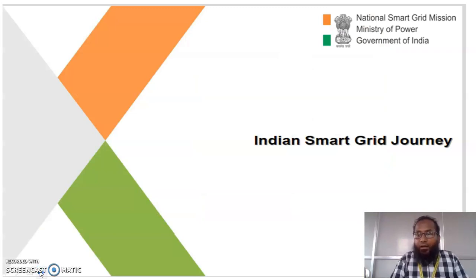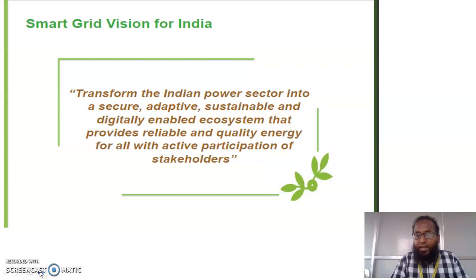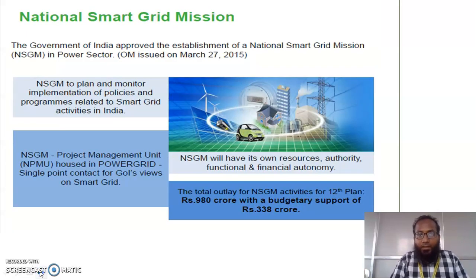In our nation, how the Indian smart grid journey started consists of two major parts: mission and vision. The vision is the long-term goal — to transform the Indian power sector into a secure, adaptive, sustainable, and digitally enabled ecosystem that provides reliable and quality energy for all with active participation of stakeholders, as smart grid mainly depends on customer choices. The mission is the short-term goal: establishment of the National Smart Grid Mission in the power sector on March 27, 2015, mainly used for monitoring and implementation of policies, with an activity budget of 338 crores.